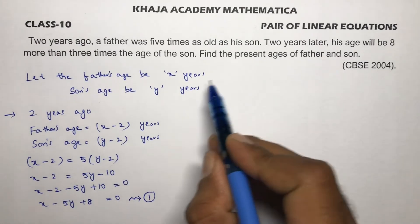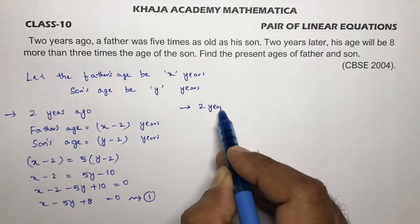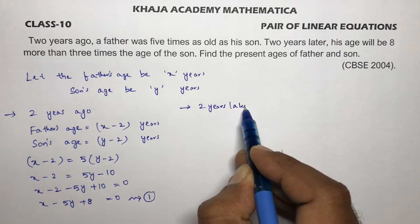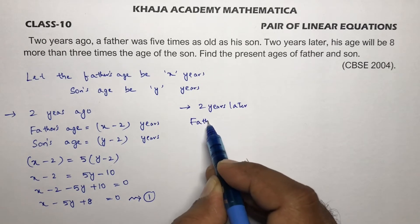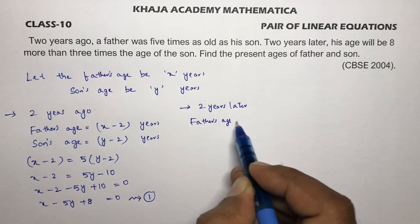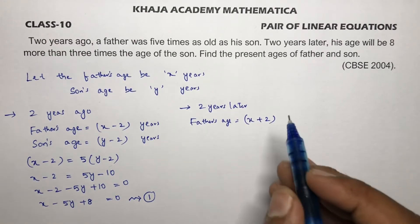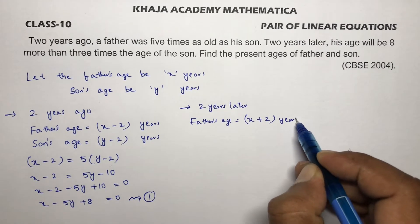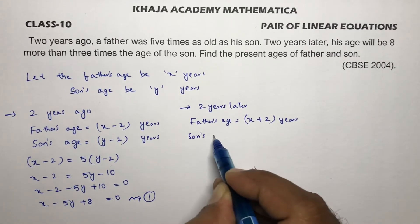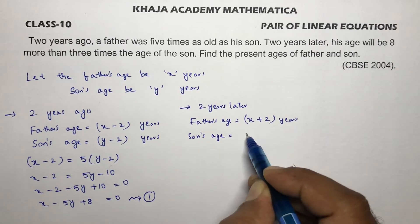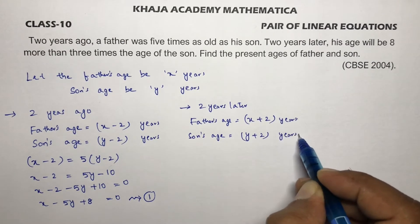Now solving for two years later: the present age is x, so two years later father's age will become x plus two. Similarly, son's age two years later will become y plus two.